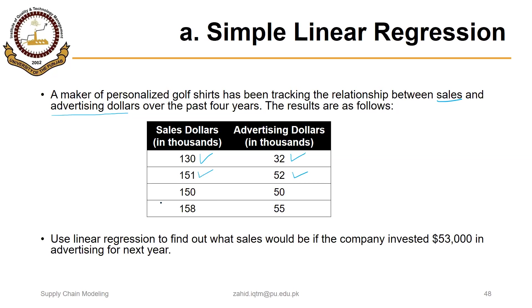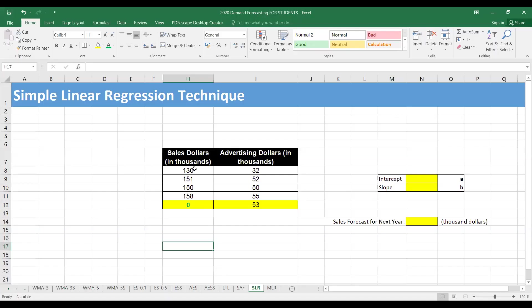You have to use linear regression to find out what sales would be if the company invested $53,000 in advertising for the next year. These are the past data and for the next year, we are planning to spend $53,000 on advertising, so what would be the sales for that year?